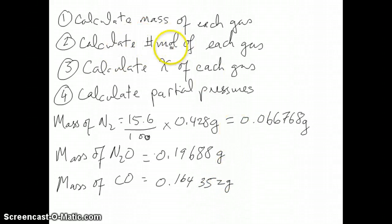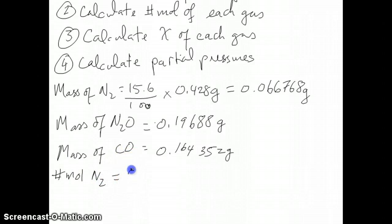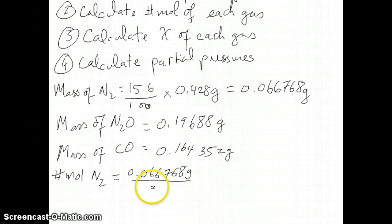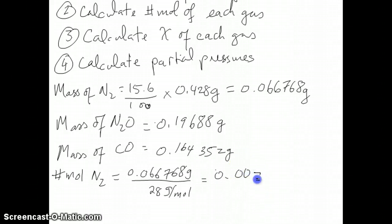The next step is to calculate the number of moles of each of these gases. Number of moles is just the mass divided by the molar mass. So you take 0.066768 grams of N2 divided by the molar mass of N2, which is 28 grams per mole. If you make that calculation, you should get 0.0023846 moles.